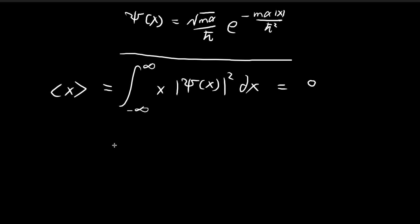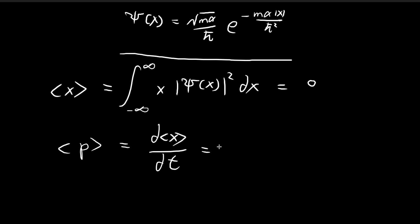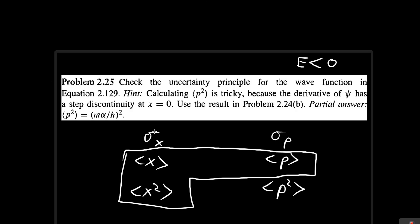Because of this fact, we know that the expected value of momentum, which is equal to the derivative of the expected value of x, is therefore also equal to zero. You just substitute zero in. So we've already found two of these terms.